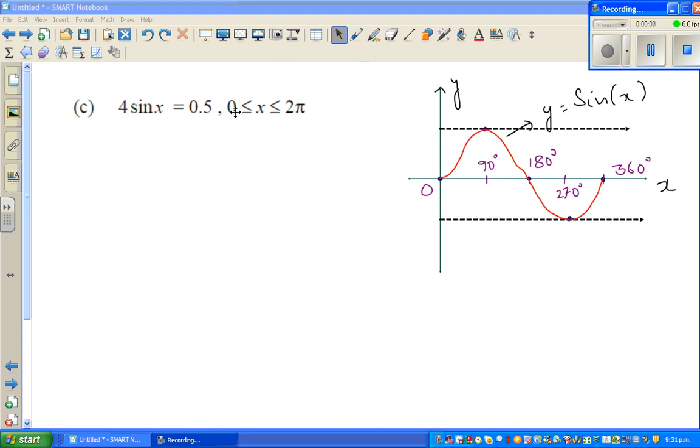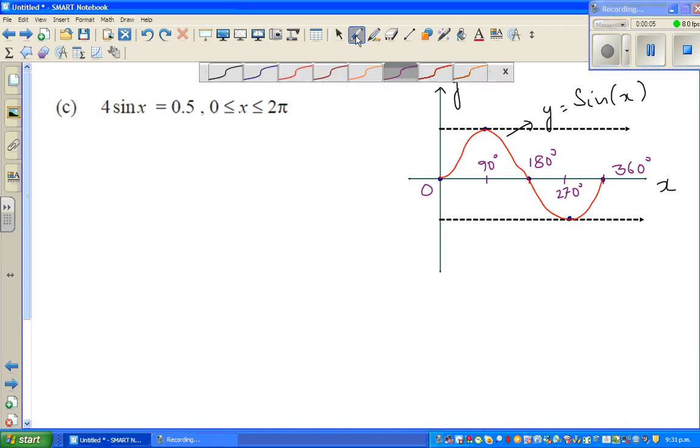Let us look at this question which is to solve a trig equation: 4 sine x equals 0.5, and we want to find the answer in radians between 0 to 2π.